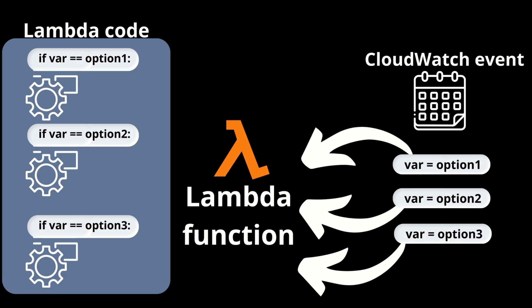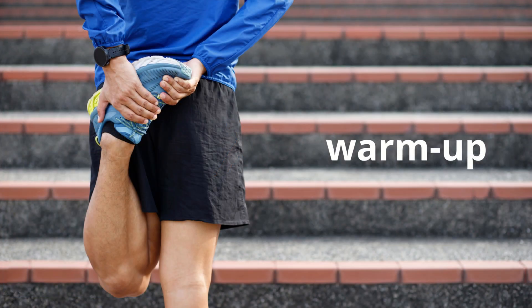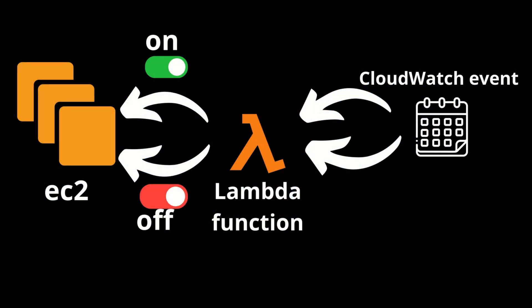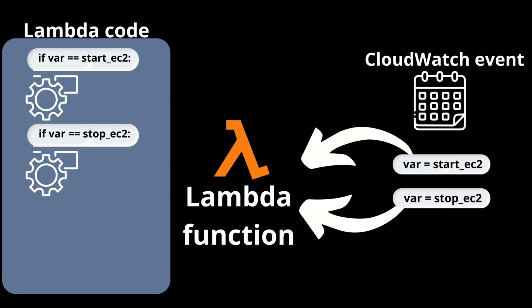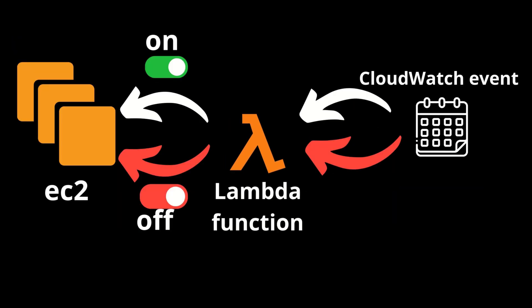Using CloudWatch event, you can pass a variable with different values and run different code — just one Lambda function with completely different behavior, depending on what value you pass. For example, one Lambda function can be responsible for starting and stopping EC2 machines, depending on what variable value you pass. The Lambda function will execute start or stop for EC2 machines.